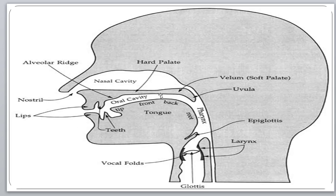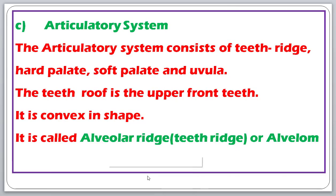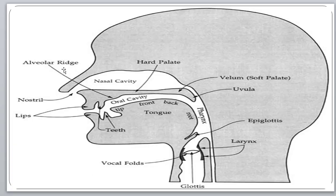The articulatory system consists of teeth ridge, hard palate, soft palate, and uvula. The roof of the upper front teeth is convex in shape and is called the alveolar ridge. Here is our mouth, and the front upper part of our mouth is called the alveolar ridge.